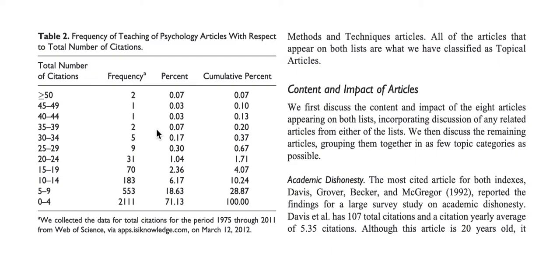You can also be asked questions like 'no greater than 19,' meaning at most 19 citations. So you're going to add 2,111 plus 553 plus 183 plus 70, and that gives you the count for no greater than 19.